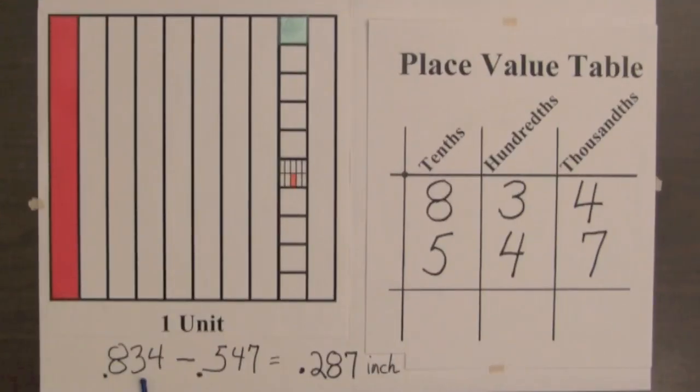Let's compute the difference of the decimals we just found by using a place value table. Starting with the thousandths digits, we need to subtract 7 thousandths.